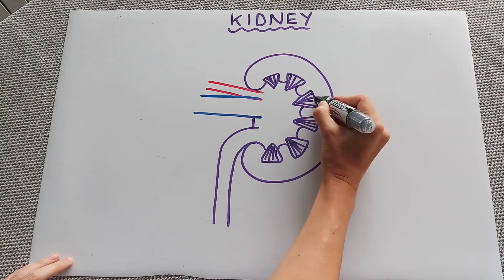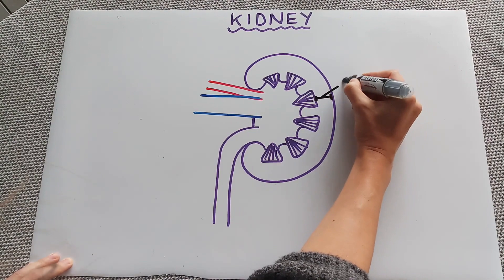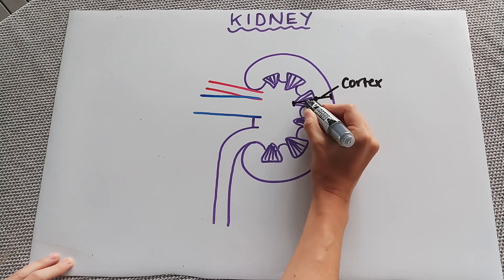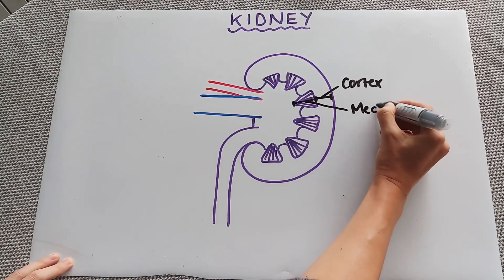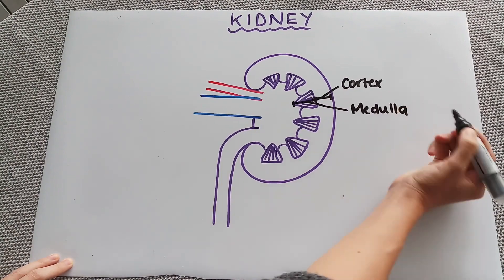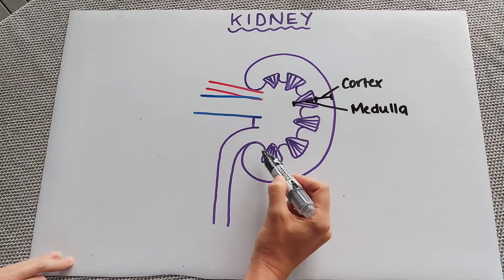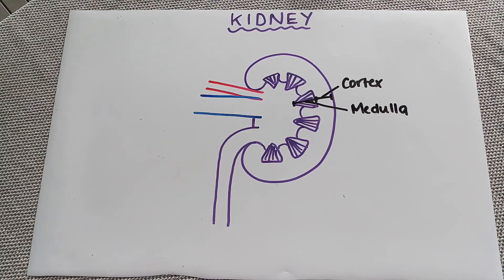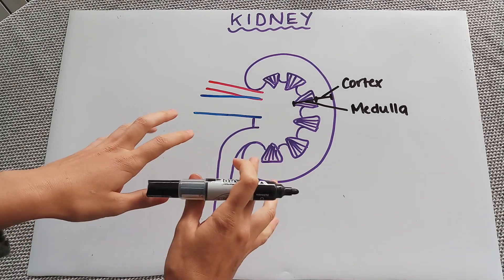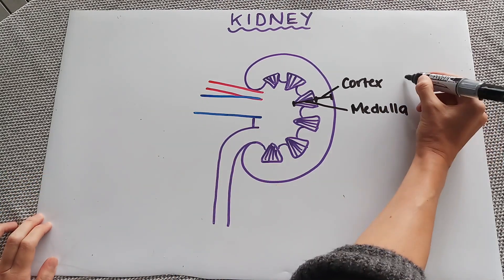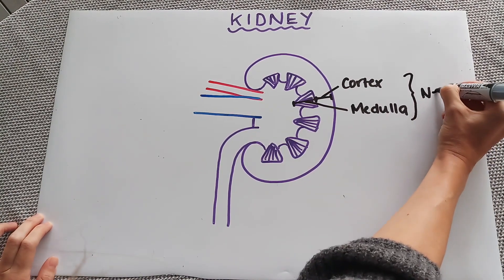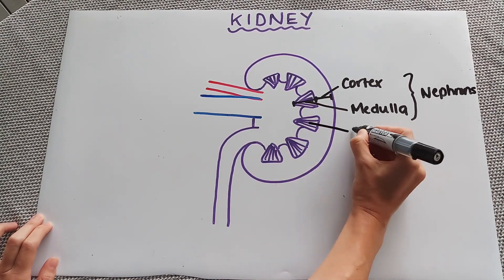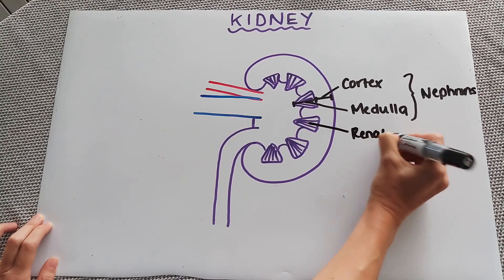That is the general structure of a kidney — very simple. In terms of labeling, we'll start from the outside. This outer section is the cortex, and the section in from that is the medulla. If you were to dissect a kidney, the cortex would be a lighter color and the medulla a slightly darker color. Within the cortex and medulla this is where we have the nephrons, and the medulla is made up of pyramids called the renal pyramids.